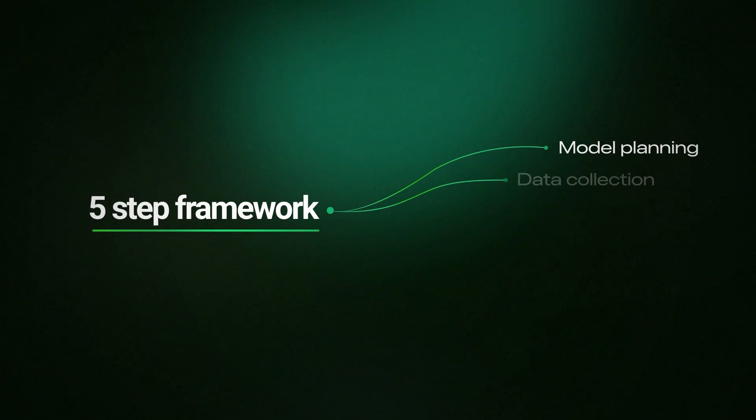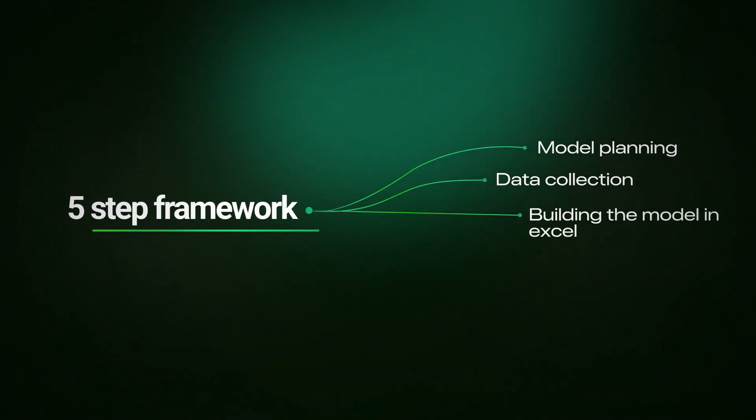There's an entire process around financial modeling — it's more than what you do in Excel. Step 1: Model Planning. You have to decide what kind of model you're going to build and choose the right model type for the specific business case. Step 2: Data Collection. Gather all necessary inputs and assumptions — it's important that we challenge the assumptions during this phase. Step 3: Building the model in Excel. This is where most people think the work begins, but it's actually just one part of the process, and it's critical to make sure the model is accurate.